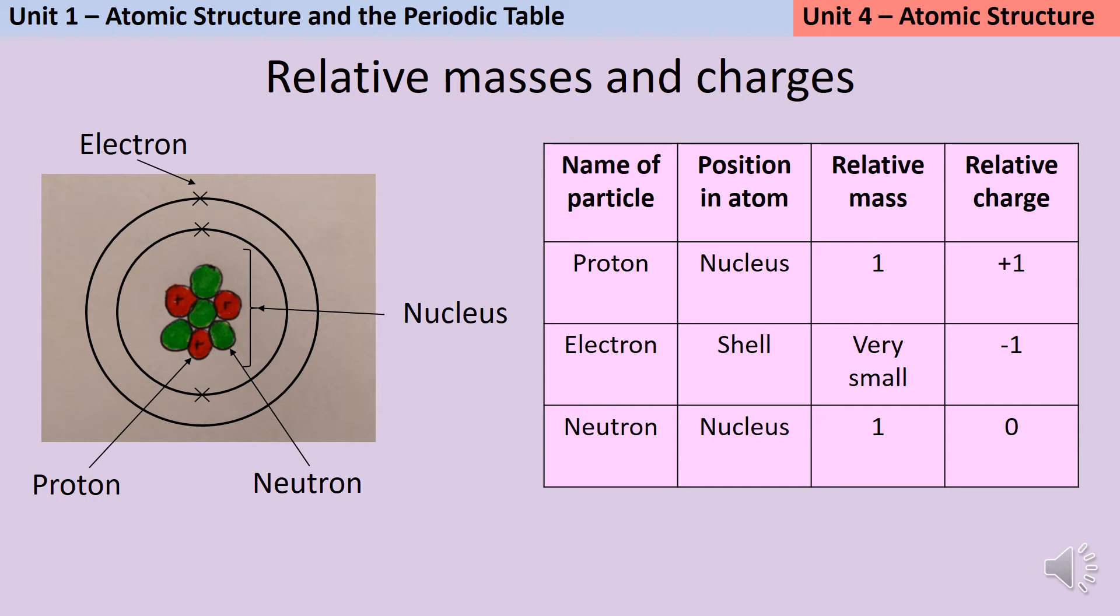For GCSE, you may be asked to give the relative mass or relative charge of protons, electrons and neutrons. Relative means compared to something else. If I say that a dog is relatively big, I mean compared to other dogs. I don't mean that it's the size of the moon. So you may have just started out being told that protons are positive, electrons are negative and neutrons are neutral, and that is true. But if in the GCSE exam they ask you for the relative charge, it's really important that you put the number there.